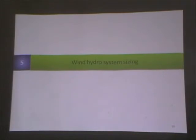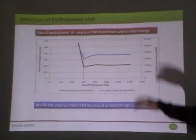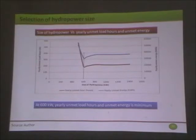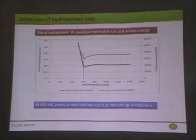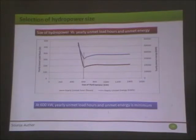Now let's switch to wind-hydro system sizing. I will show the main slides only. For selection of hydropower size, the Y-axis shows yearly unmet load hours where demand is greater than supply, and the X-axis shows different sizes of hydropower. The minimum yearly unmet load occurs when the hydropower size is 600 kilowatt, related to the demand curve of the area shown earlier. For my calculations, I chose 650 kilowatt as the optimum size.